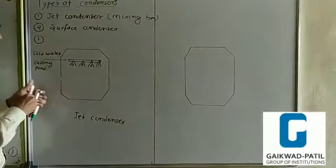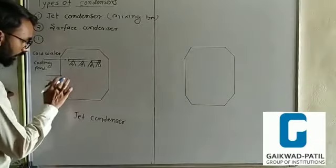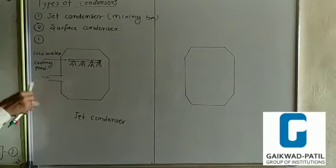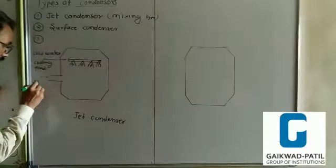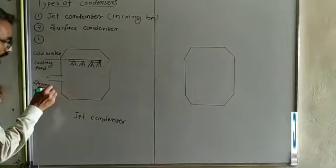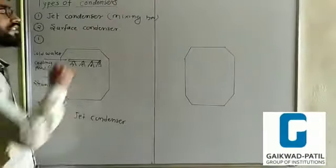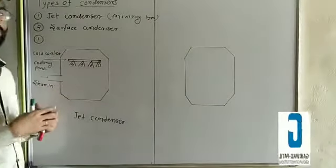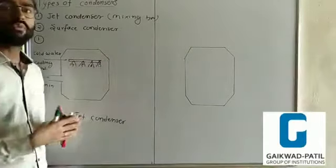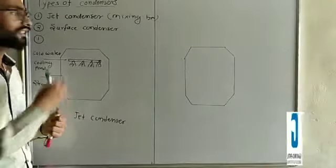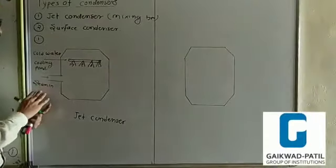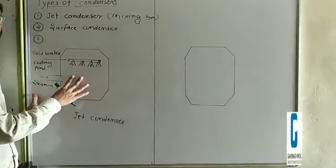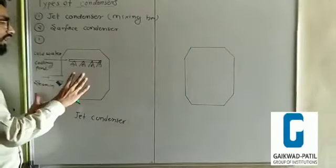Your steam is coming from the exit of the turbine. Some amount of the steam is used to produce work from the turbine, and the remaining amount of the steam will be sent into the condenser. So we put the steam into the condenser.